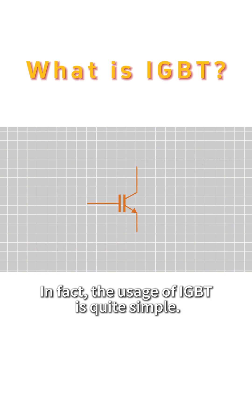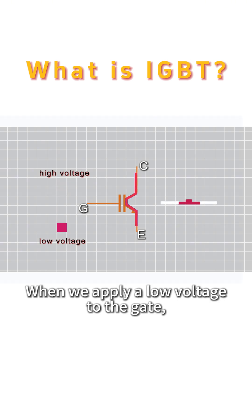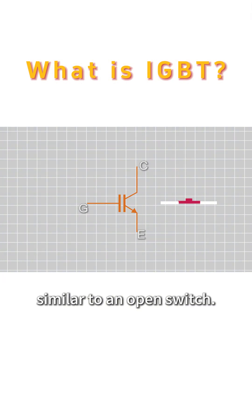In fact, the usage of IGBT is quite simple. When we apply a high voltage to the gate, it turns on, similar to a closed switch. When we apply a low voltage to the gate, it turns off, similar to an open switch.